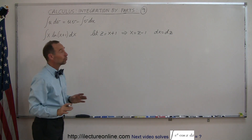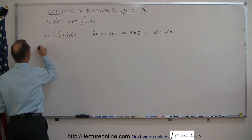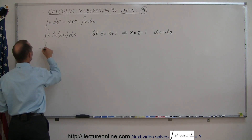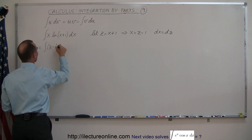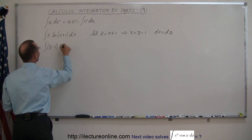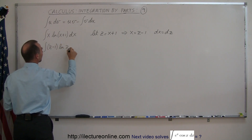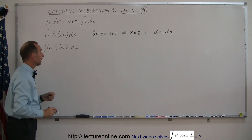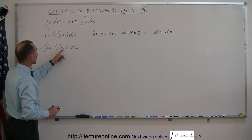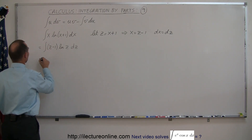Let's substitute those things into our integral. This now becomes the integral of, instead of x we write z minus 1, the natural log of x plus 1 which is the natural log of z, and instead of dx we write dz. We can multiply through and split this into two integrals.